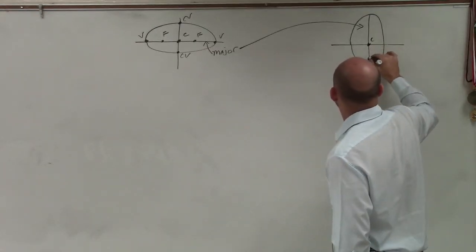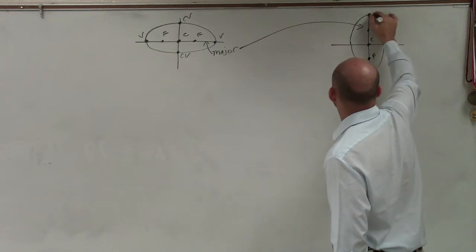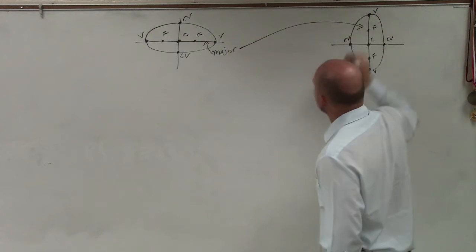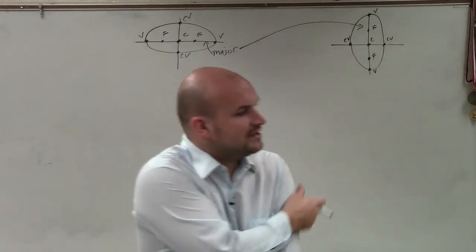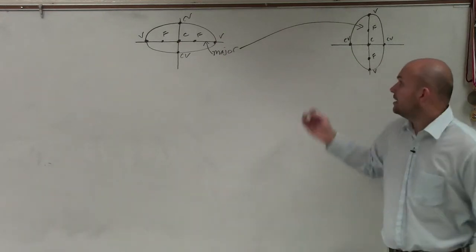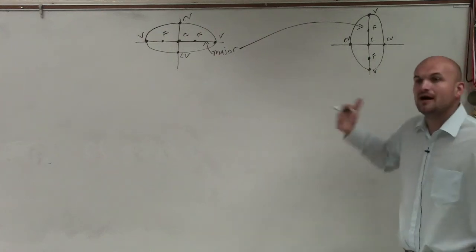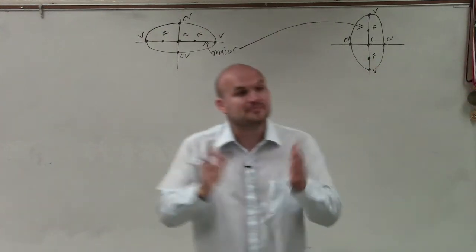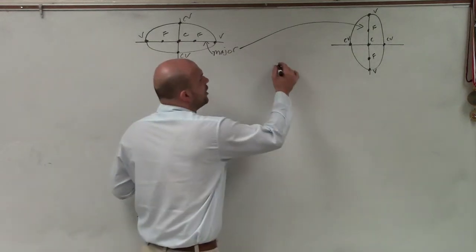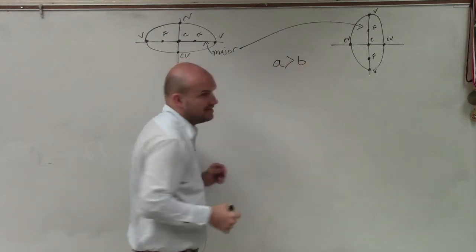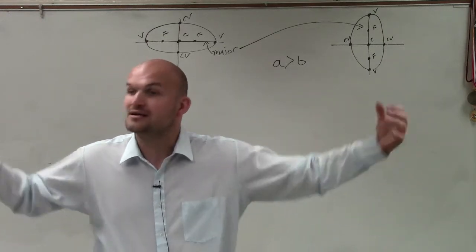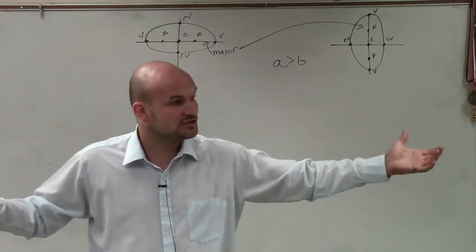We'll just go through again as a review. Vertices, vertices, co-vertices. Now it's very important, because sometimes if I ask you to graph the ellipse, I gave you different information, like the length of the minor axis, which is the whole length from co-vertice to co-vertice. And then you can find your length of b. For this we had two different formulas. It was very important that when dealing with ellipses, a was always greater than b, because a represented the distance from the center to your vertices, and your vertices lied on the major axis, which was obviously larger than the minor axis.